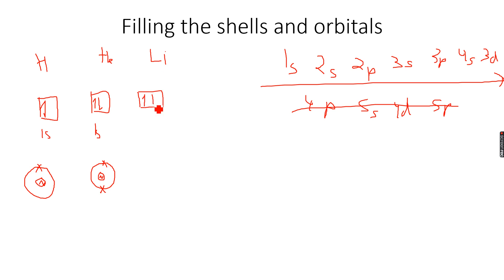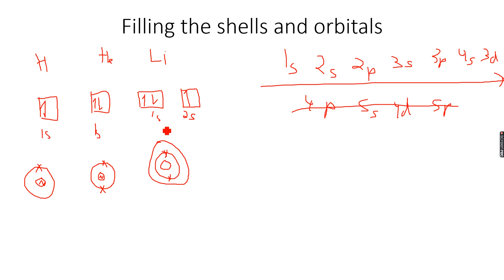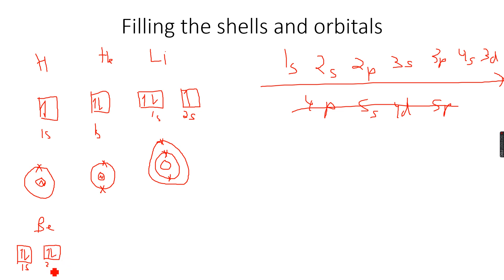When we come to lithium, which has three electrons, we fill two in 1s and one in 2s. Then for beryllium, which has four electrons, 1s will have two electrons and 2s will have the other two electrons — four electrons total.